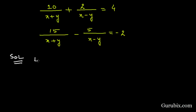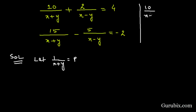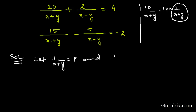Let 1 over (x plus y) equals p. We did this because we can write 10 over (x plus y) as 10 times 1 over (x plus y), so we let this value equal p. Similarly, 1 over (x minus y) equals q.